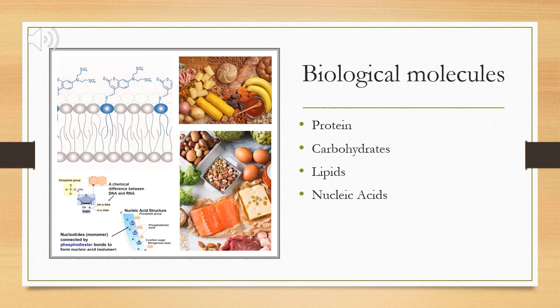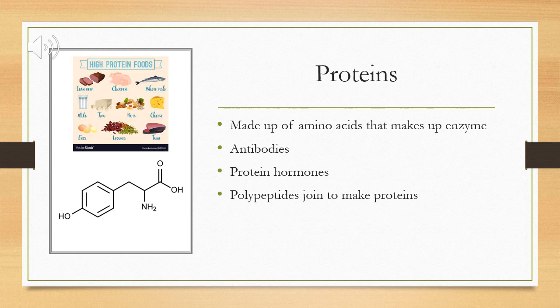Let's start with protein. Proteins are made of amino acids that make up enzymes, which produce polypeptides. These polypeptides will join and make protein.